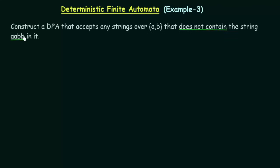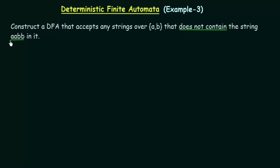So here is our task. Construct a DFA that accepts any strings over AB that does not contain the string AABB in it. So we are to construct a DFA over the alphabets AB and it should accept all strings over AB, but it should not contain the sequence AABB in it. This sequence should not be present. It should always reject whenever this sequence is present, and it should always accept all other sequences.